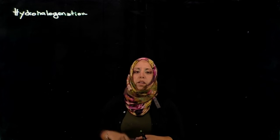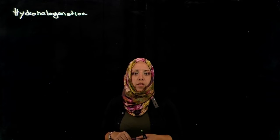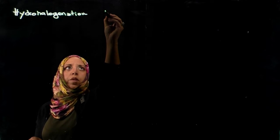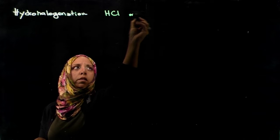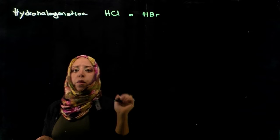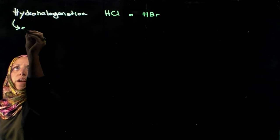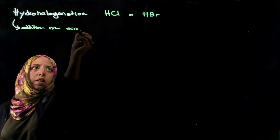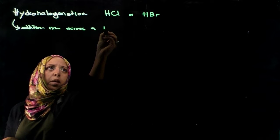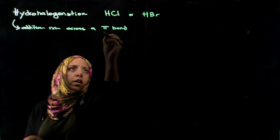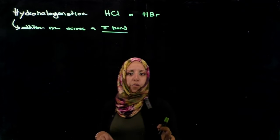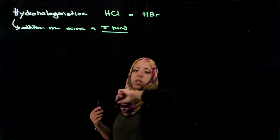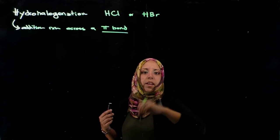Welcome. In this video, we're going to be talking about hydrohalogenation reactions. They're addition reactions across a pi bond. The reagents we use are typically hydrogen chloride or hydrogen bromide. The pi bond is acting as the nucleophile, attacking the electrophile, which is the hydrogen. So we call it an electrophilic addition reaction.